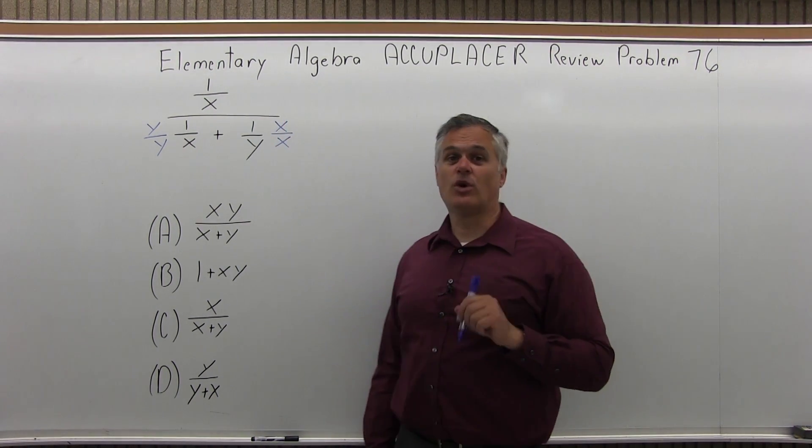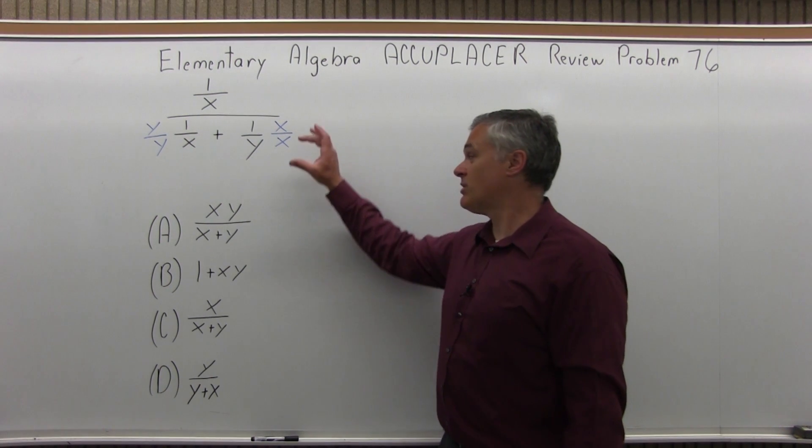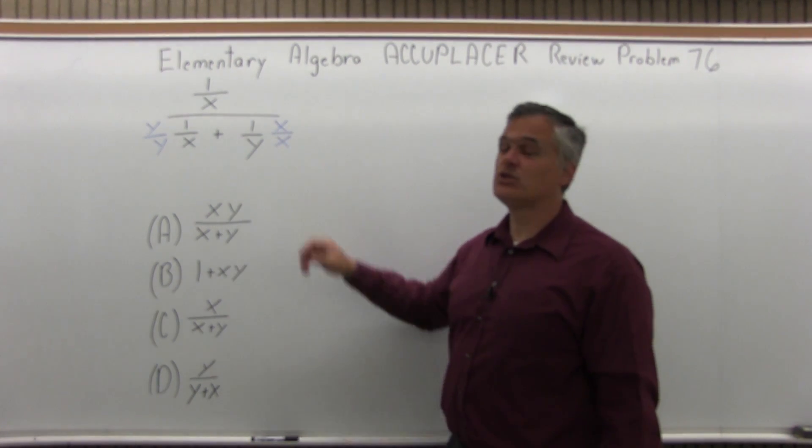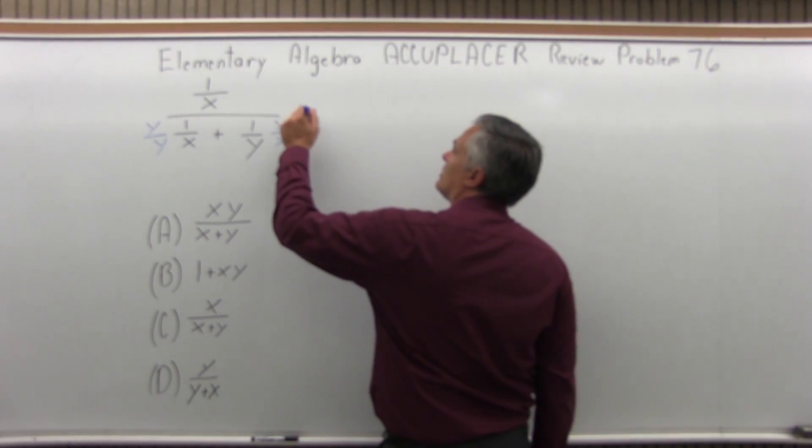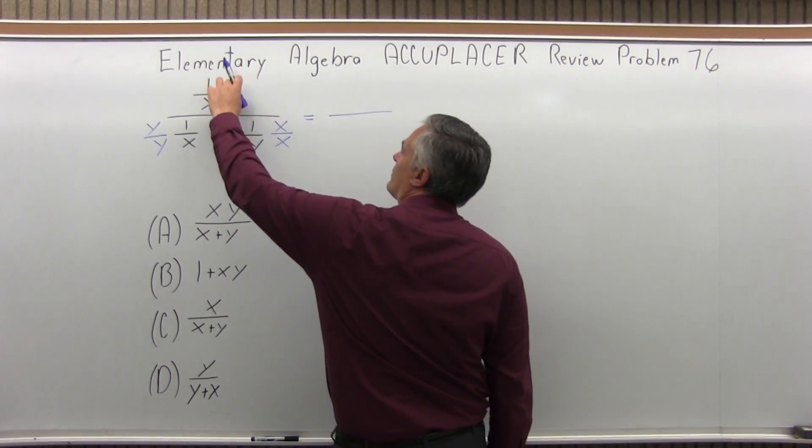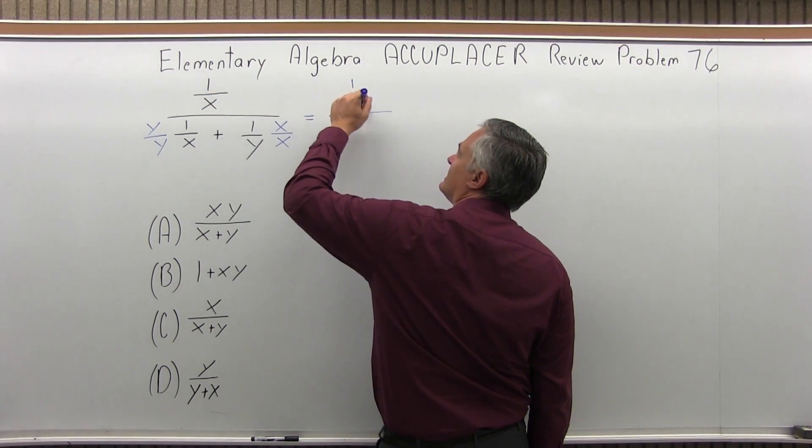But if I do, I have to multiply the numerator, the one also times x. So I'm really multiplying times x over x, which is just a big funny looking one. For now, the upper fraction of one over x will stay as is.